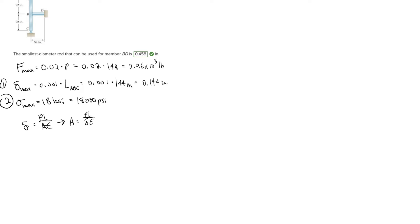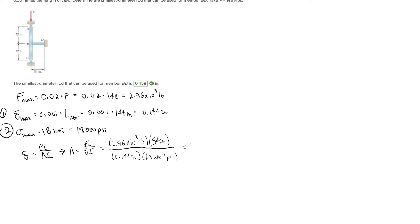Plugging in everything to solve for area: P equals F_max = 2.96×10³ pounds, L is the length of member BD which from the figure is 54 inches, keeping everything in pounds and inches. The maximum deformation is 0.144 inches, and E = 29×10⁶ psi. Solving for area gives A = 0.03828 in².